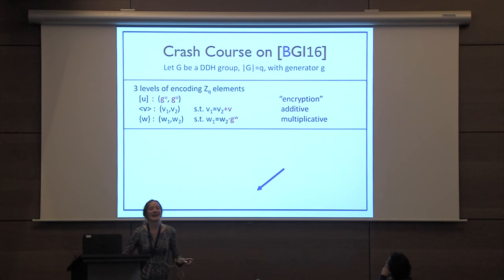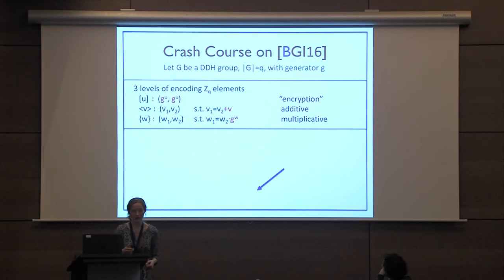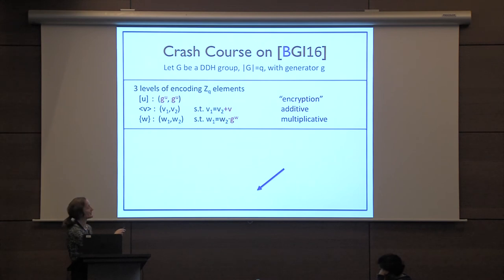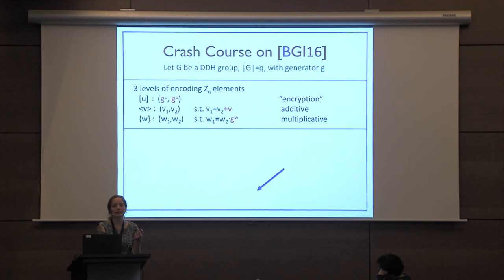At a high level, think about three ways to encode a Z_Q element. Since we're working with DDH, let G be a DDH-hard group of prime order Q with generator little g. The first encoding is taking value U as an exponent: g^U. The second is a standard additive secret sharing over Z_Q. The third is a pair of group elements — shares — such that the group elements differ in discrete log by the encoded value.